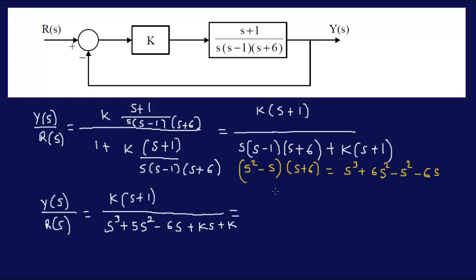Minus 6s plus of course Ks plus K, plus K. And I can rewrite this in another form by putting the s's together because we will need that. So K(s+1) over s cubed plus 5s squared minus s, or let's use s in the end so we can see it. Minus 6s and then we have plus K.